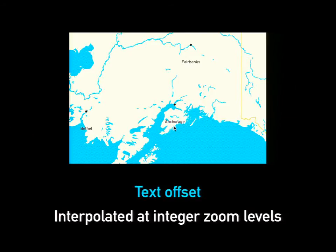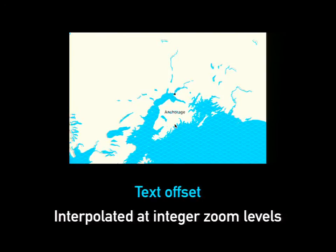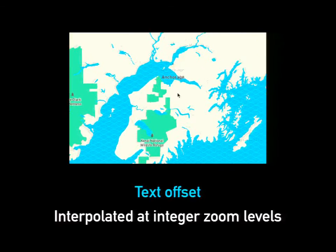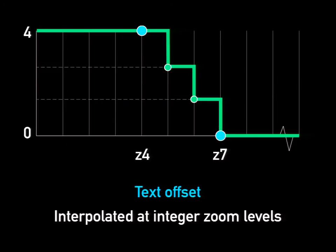Text offset is a layout property, since it affects the position of where the text is on the map. That's something that only gets interpolated once every integer zoom level. I exaggerated the size of the offset so you could see that as this zooms in, it's not quite as seamless as the first example — you can see little jumps. The graph for that function shows it's basically just calculating the value at every integer zoom level. You don't have to define each integer zoom level — you could define zoom level 1 and zoom level 20 and it will interpolate all those values, just not non-integer zoom levels.